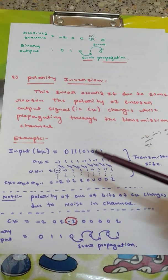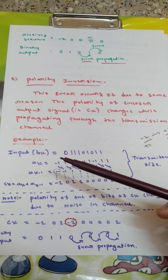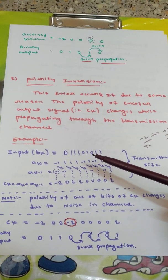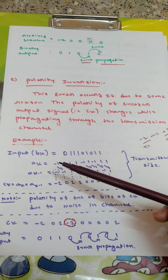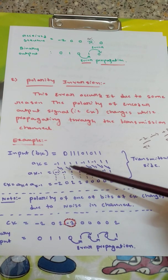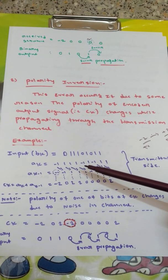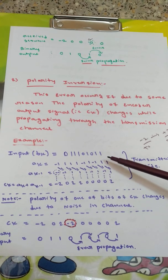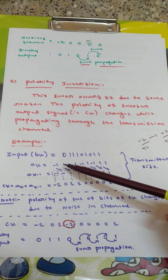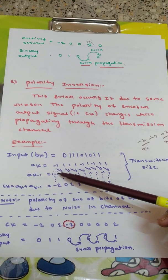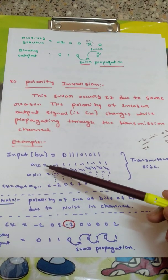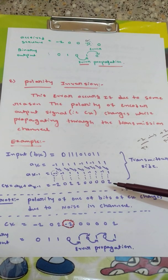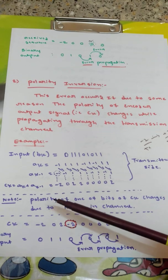Now taking an example. Let us consider input signal BK equal to 0, triple 1, 0, 1, 0, double 1. Then non-returning to zero format will be minus 1, triple 1, minus 1, 1. You just write 0 as minus 1 and 1 as it is. AK minus 1 is delayed version of this one with minus 1 assumed here. CK equal to addition of these two: minus 2, 0, 2, 2, 4 zeros and 2.